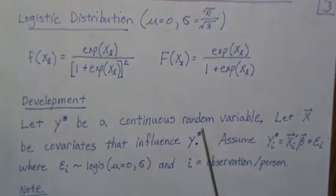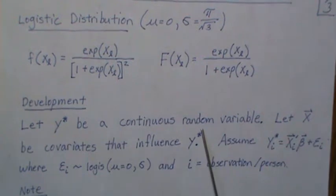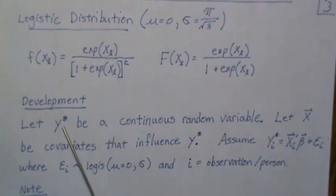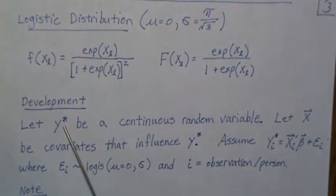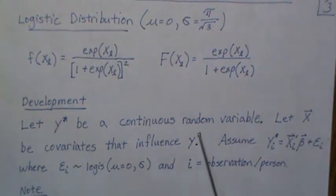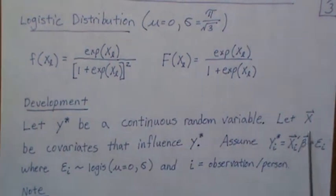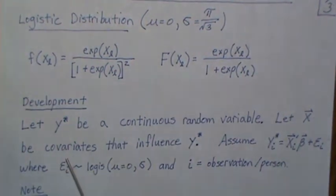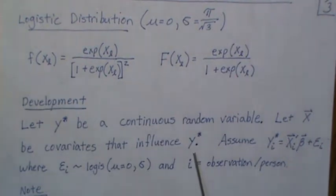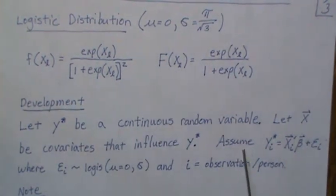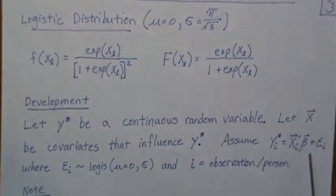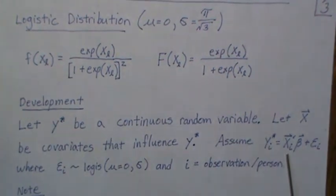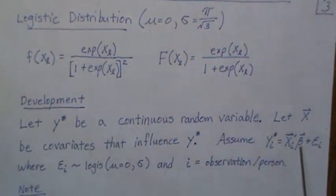But the development, underlying development, sort of assumes there's a latent variable or continuous variable underneath that we're not observing. So let's let y* be a continuous random variable, let X be a vector of covariates that influence y*, and let's assume that y* can be modeled with this linear function with some unknown beta coefficients.